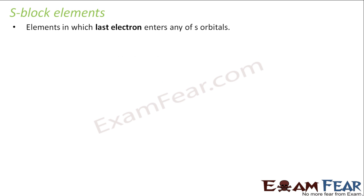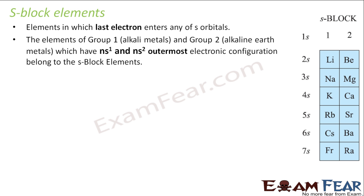Let's take the s-block elements. Elements with the last electron entering s orbitals are called s-block elements. These are group 1 and group 2 — that is alkali metals and alkaline earth metals. They have the electronic configuration where the outermost electron will be ns1 or ns2.